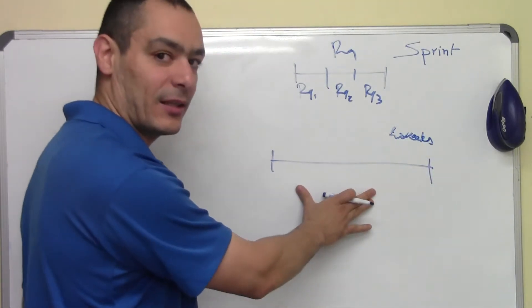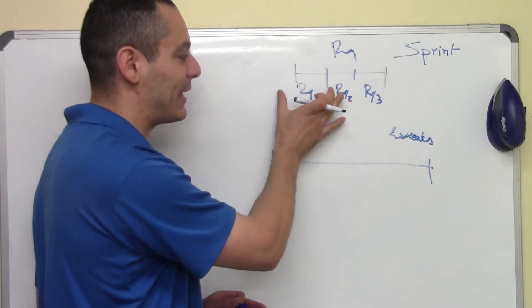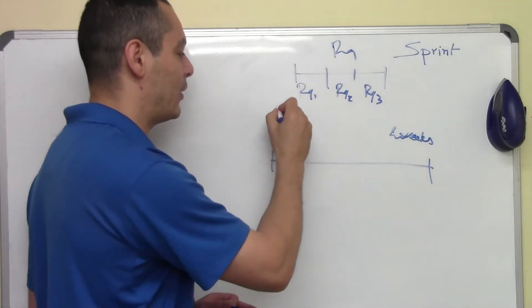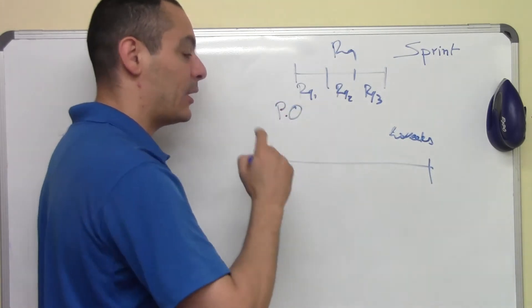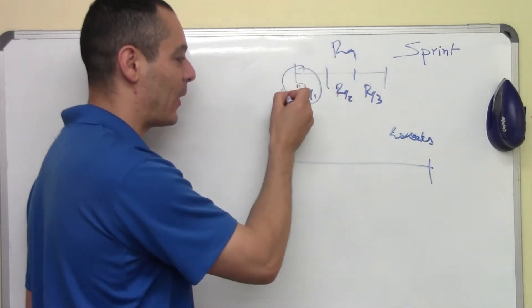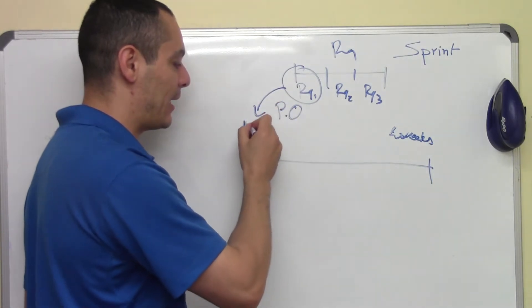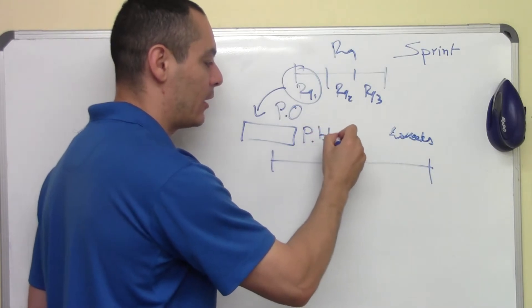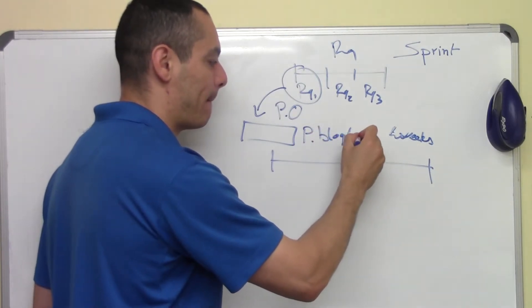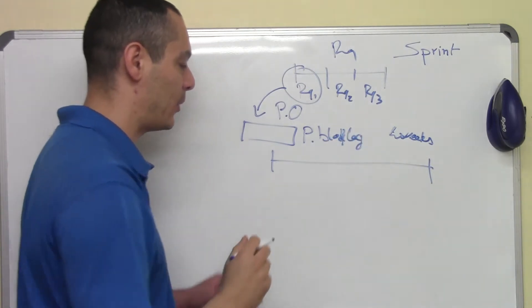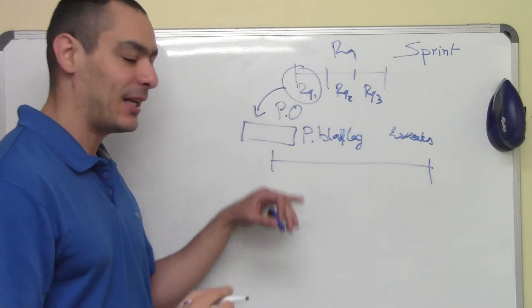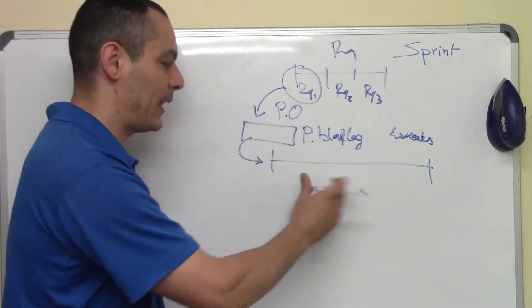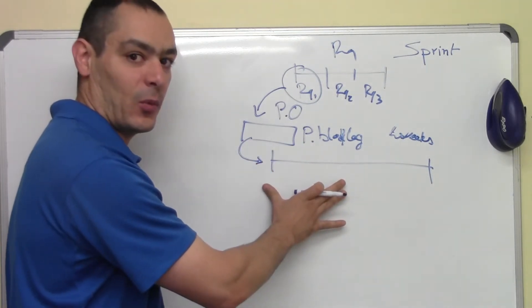But before we start, we need to analyze and simplify these requirements. And this is the job of the product owner. The product owner will fix these requirements and build what we call the product backlog. That's very important. When it's done, it's going to give this product backlog to the team. Here, the team will work.